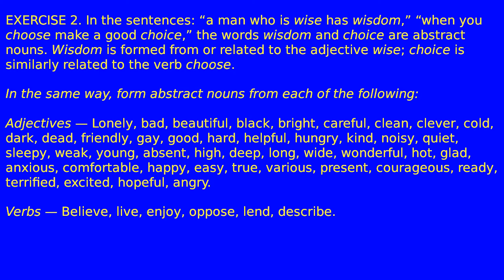Exercise two: in the sentences 'A man who is wise has wisdom' and 'When you choose, make a good choice,' the words 'wisdom' and 'choice' are abstract nouns. Wisdom is formed from, or related to, the adjective 'wise'; choice is similarly related to the verb 'choose.' In the same way, form abstract nouns from each of the following adjectives.